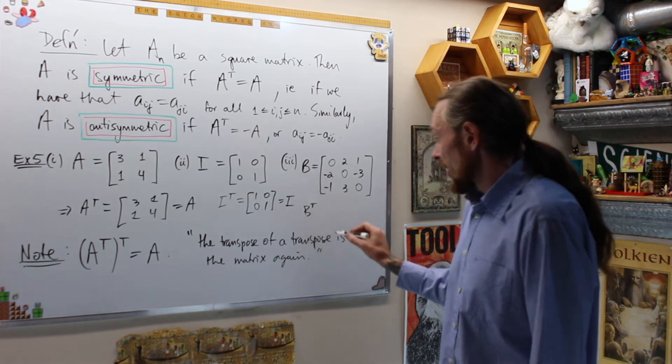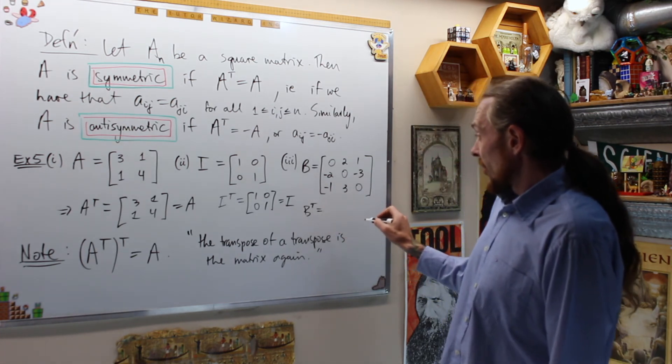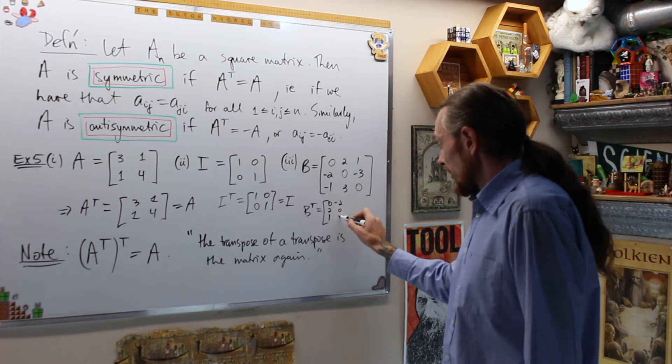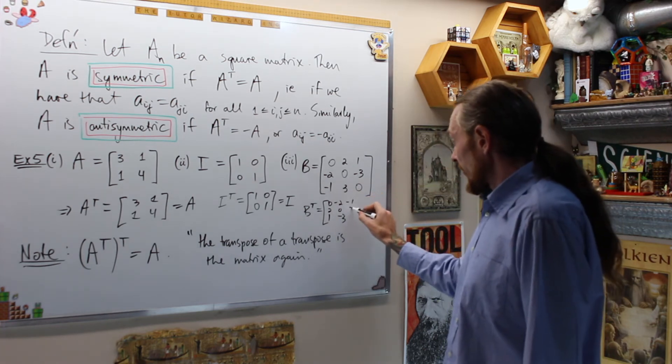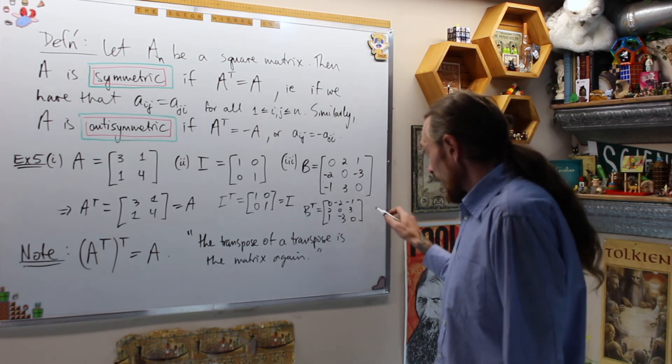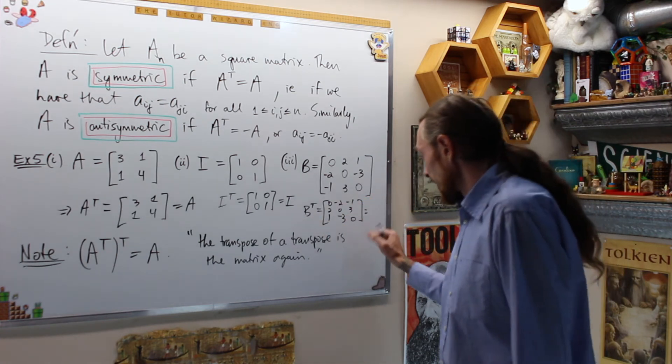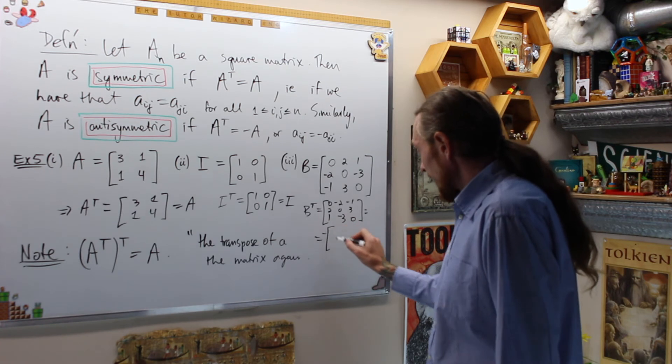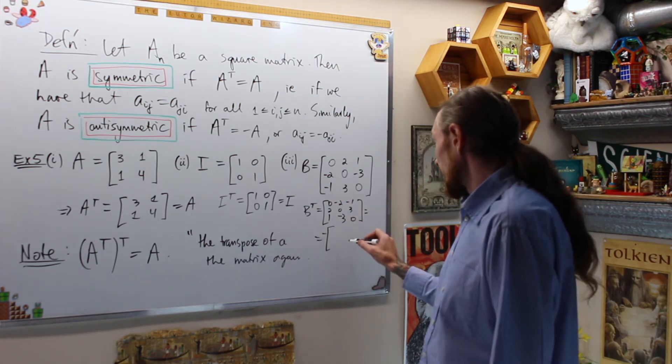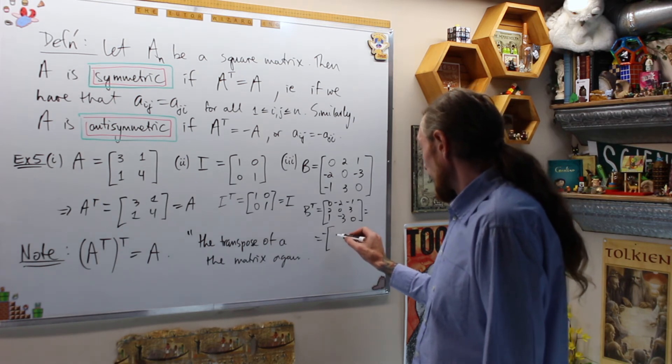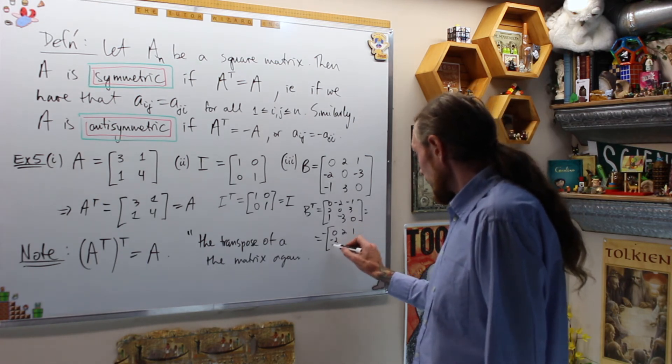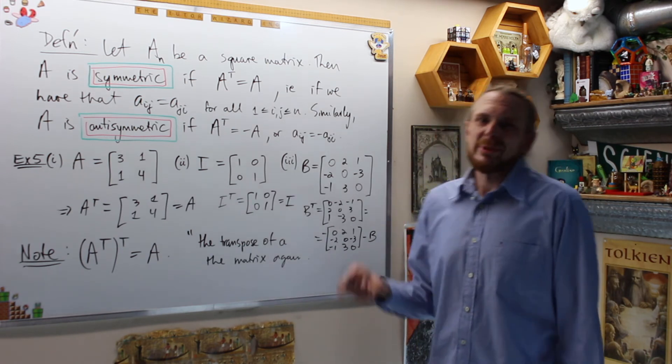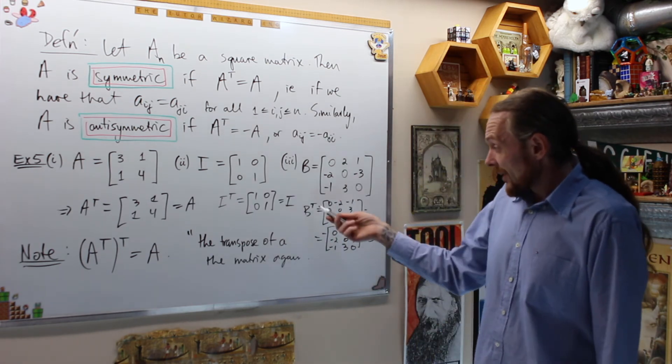If this is B, what's B transpose? B transpose is equal to, what do we get? This is our first row. We're going to get 0, 2, 1. Then this one, it will be negative 2, 0, negative 3. And then this will be our last row, negative 1, 3, 0, which is if we factor that out, a negative out of every spot, we will get, and that will change that. This will equal negative, pull a negative out of every single spot. And we're going to get 0, 2, 1, negative 2, negative 1, 3, 0, negative 3, 0, which is negative B.